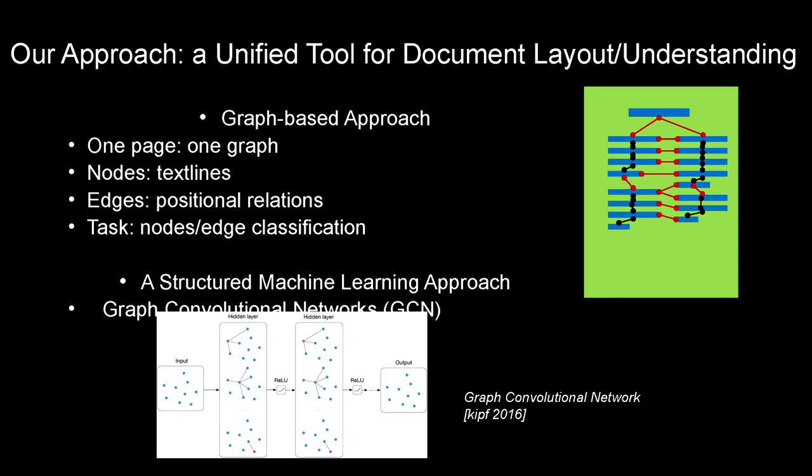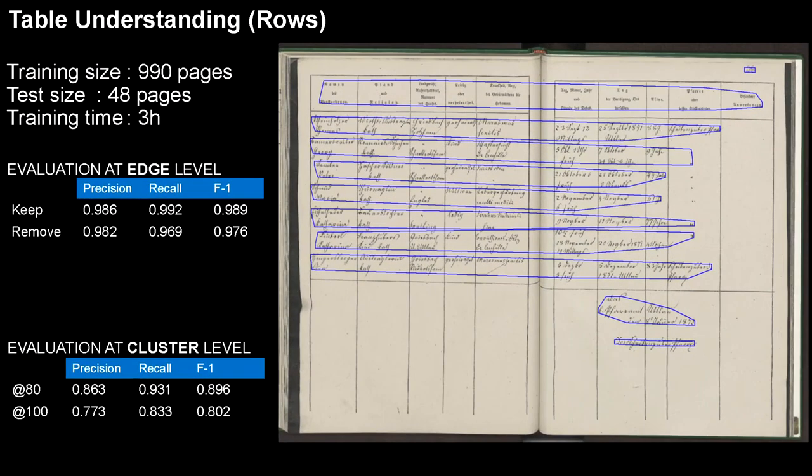It's based on a graph convolution network. For this specific dataset, we are basically able to extract eight rows out of ten in a very reliable manner for the full collection. We are still working on the technology, so we should be able to improve the results.